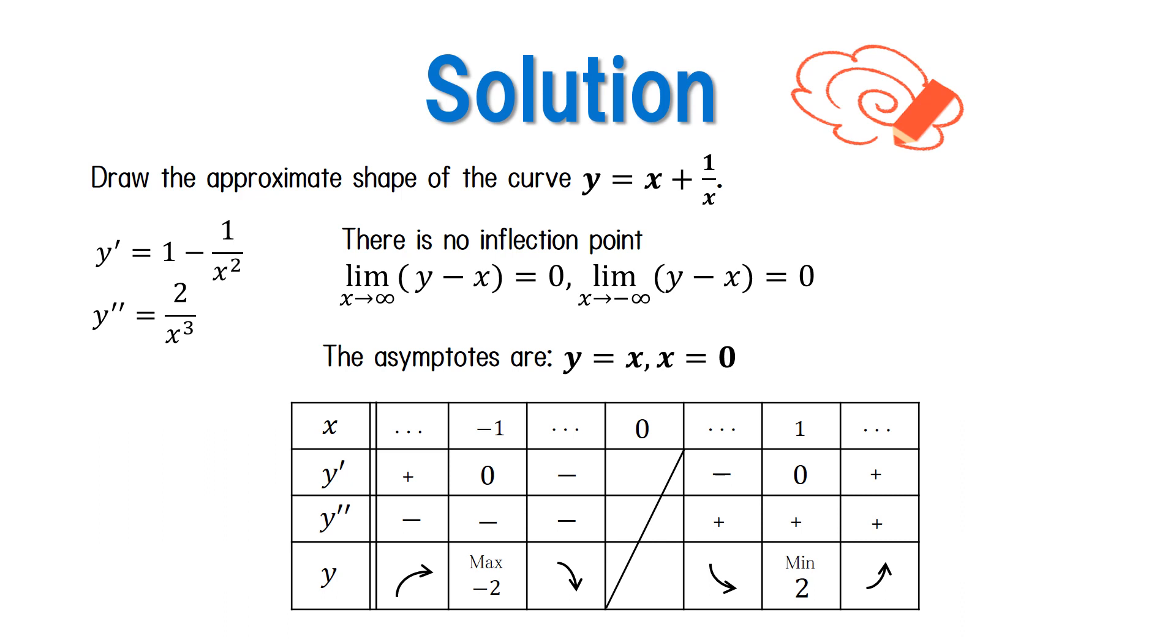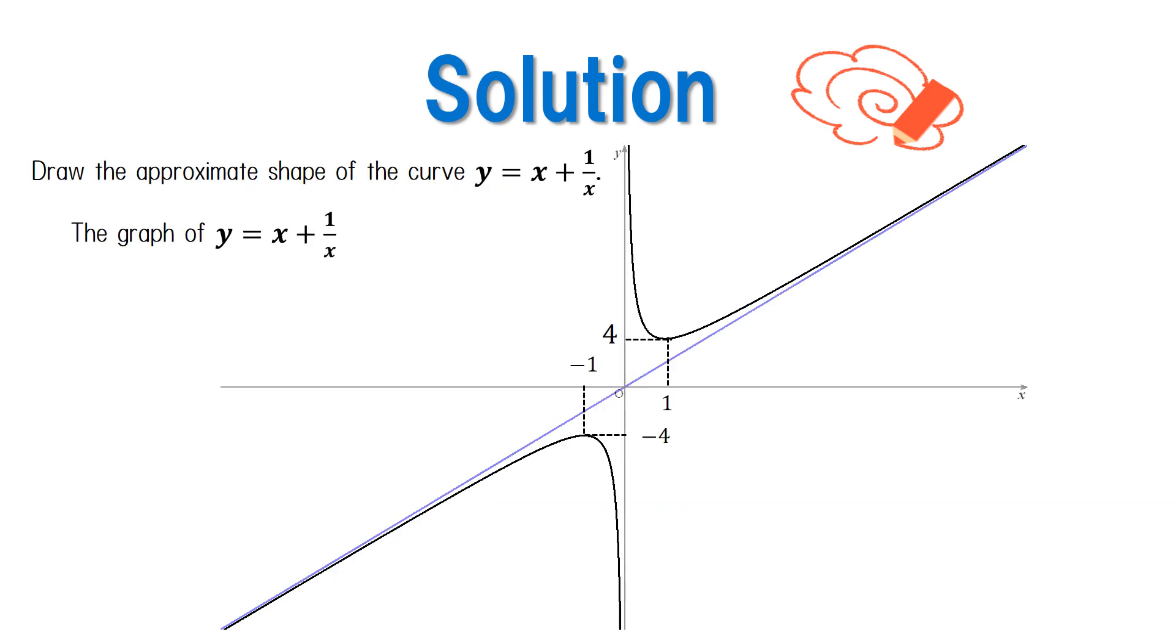If we follow the maxima and minima, as well as the inflection points and asymptotes from the increase and decrease table, we get a graph like this. Were you able to answer correctly?